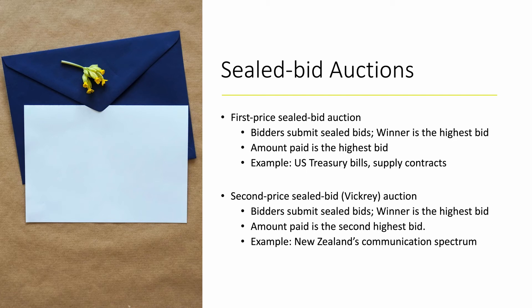The two other auction formats are called sealed bid auctions. The bidders submit sealed bids — you write down your price and put it in a sealed envelope. The winner in the first price sealed bid auction is the one with the highest bid, and you pay whatever you bid. This auction format is usually used in very large dollar-amount transactions — for example, US Treasury bills, which go into billions of dollars per transaction. Very often supply contracts, such as a government project, also use first price sealed bid auctions.